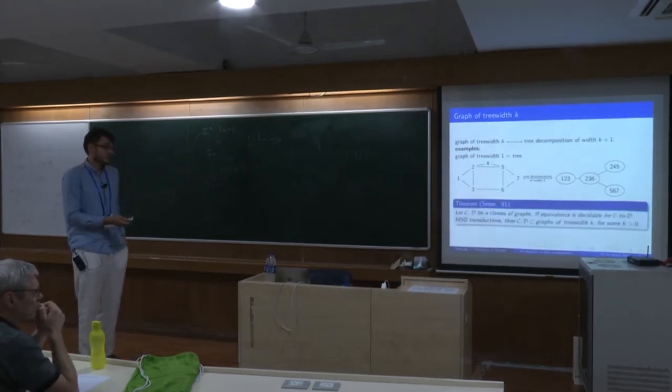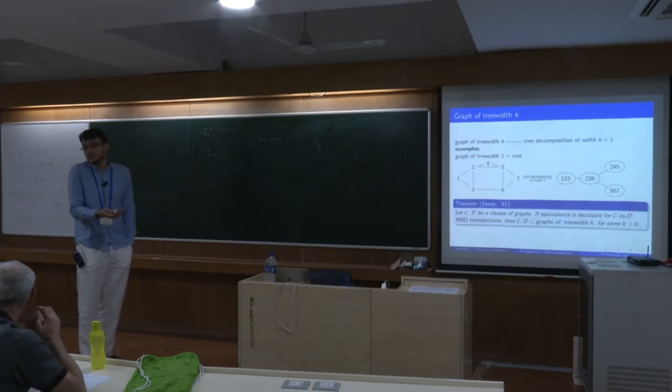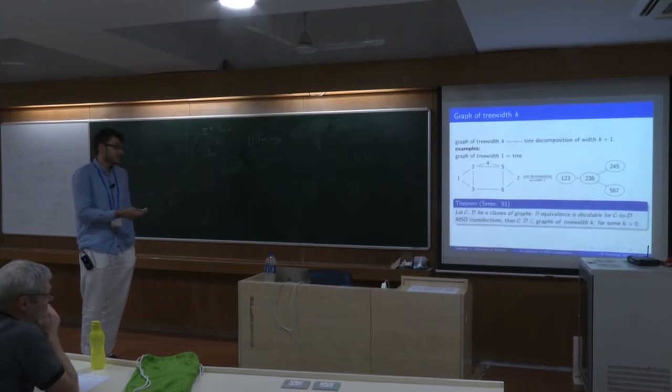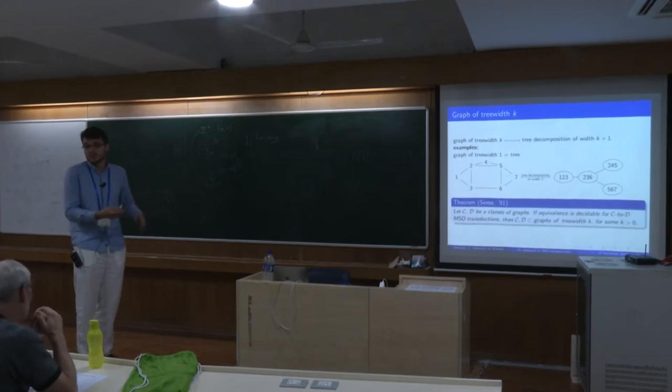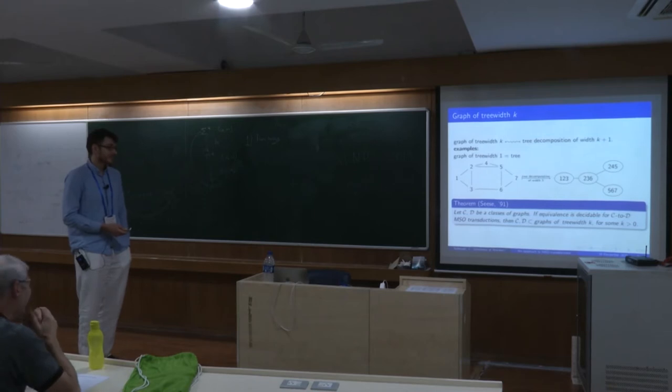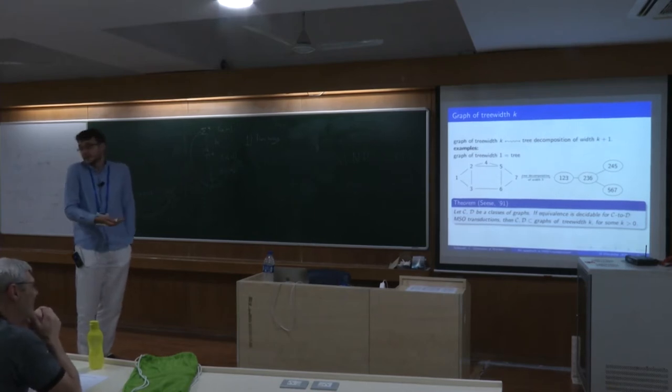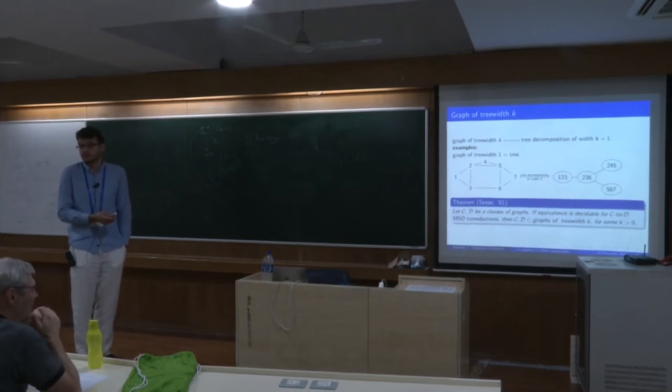What is relevant for the talk is that if equivalence is decidable for C to D MSO transductions when C and D are classes of graphs, then they must have bounded tree width. That makes our problem the most general that can potentially have decidable equivalence.